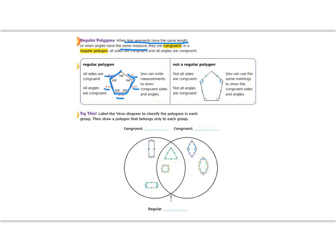Whereas if you look at the shape on the right, it has one, two, three, four, five sides as well. But it is not a regular polygon, because not all the sides are the same, and not all the angles are the same. Alright. Next, we have the try this section. It says, label the Venn diagram to classify the polygons in each group. Then draw a polygon that belongs in only each group.